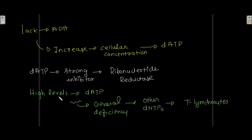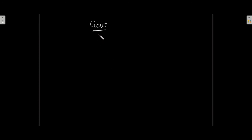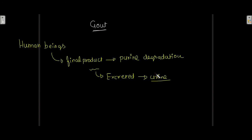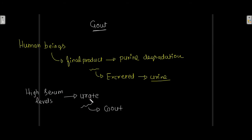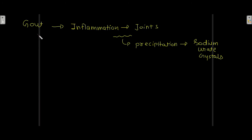In human beings, the final product of purine degradation — uric acid — is excreted in urine. High serum levels of urate lead to gout, during which there is precipitation of sodium urate crystals causing inflammation of the joints.